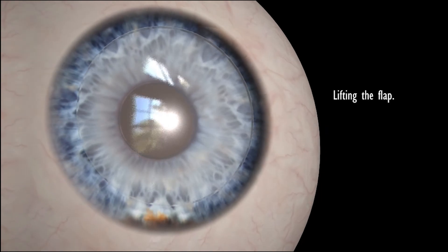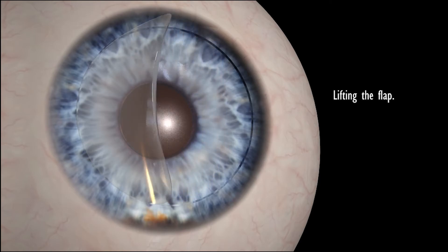Once the layers of the cornea are separated, the flap, remaining hinged on one side, is then lifted back uncovering the stroma or middle section of the cornea.